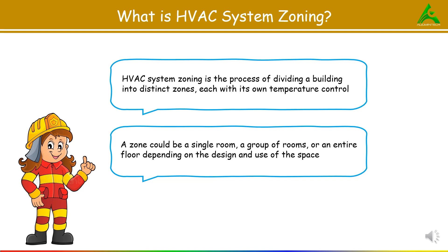In zoning, the HVAC system uses thermostats, motorized dampers and a zone control panel to regulate the temperature in each area. So instead of conditioning the entire building uniformly, zoning ensures that only occupied or high priority areas receive heating or cooling.